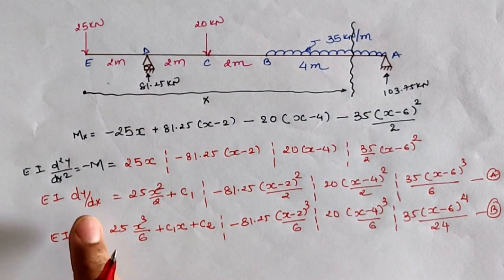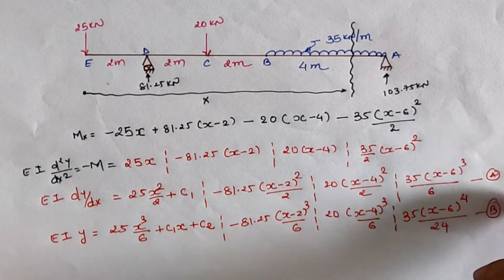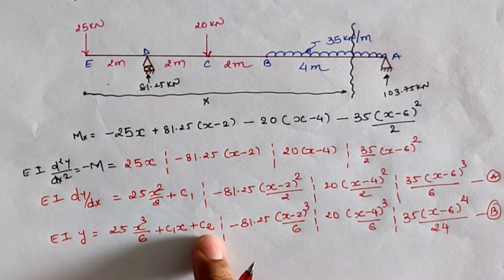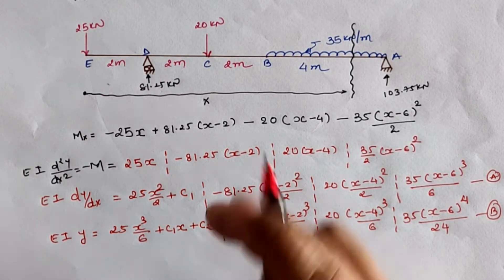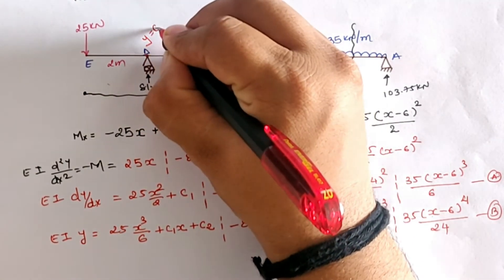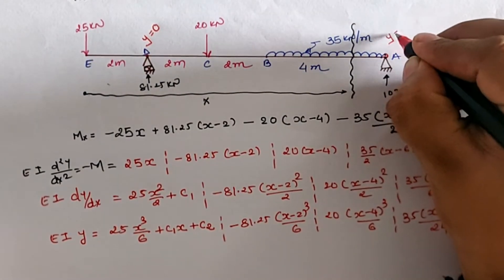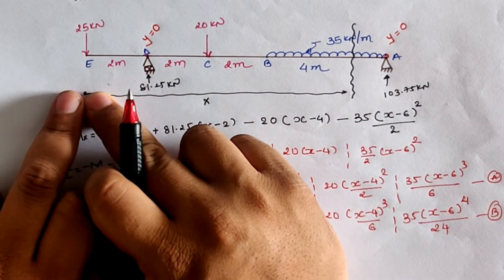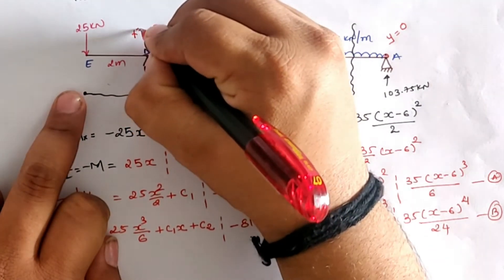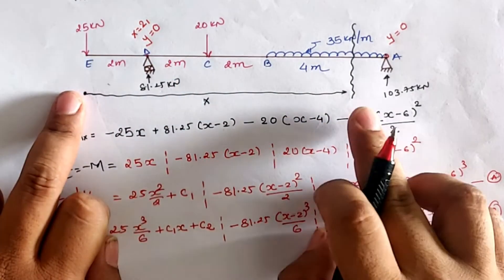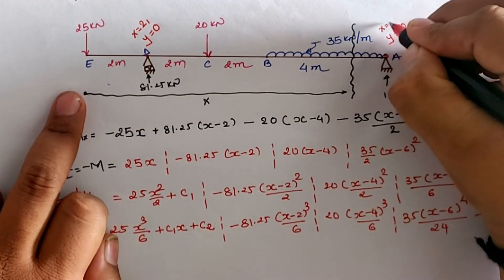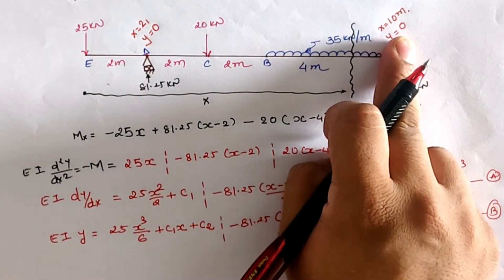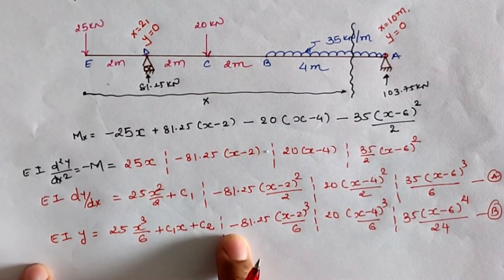For this mirror image we have the dy/dx equation (Equation A) and the y equation (Equation B). We need to calculate constants C₁ and C₂ using boundary conditions. At the roller support and hinge support, deflection equals zero. Location D is 2 meters from origin E, so x = 2, y = 0; and the total span is 10 meters, so x = 10, y = 0.